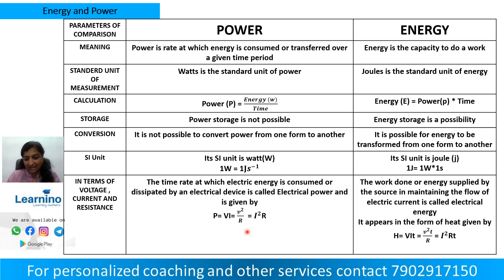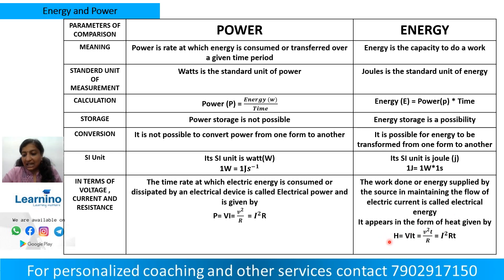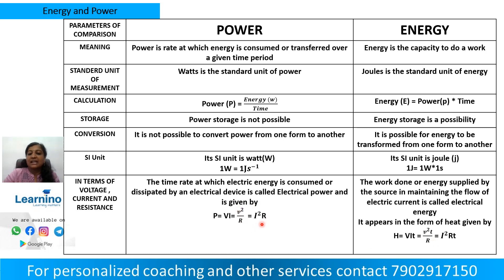The work and energy supplied by the source in maintaining the flow of electric current is called electrical energy. Electrical energy is expressed as power into time, which gives us V squared T divided by R, or I squared into R into T.